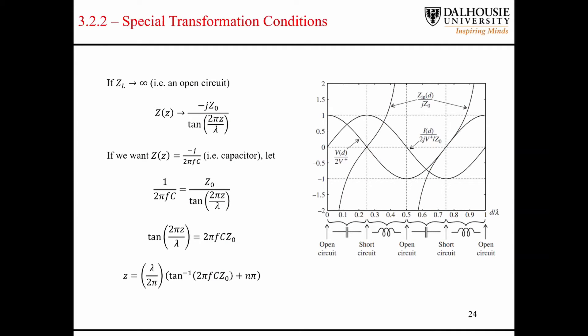So for the case where we want to make an open circuit look like a capacitor, we let the load impedance go to infinity, we end up with this equation that we saw before. We set the left-hand side equal to the impedance of a capacitor here, and then we essentially solve for Z, which gives us our length. We end up with this expression here, so if we want a certain capacitance,